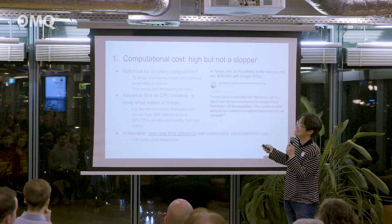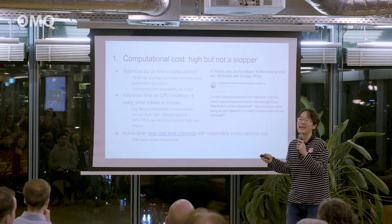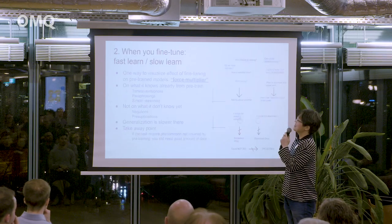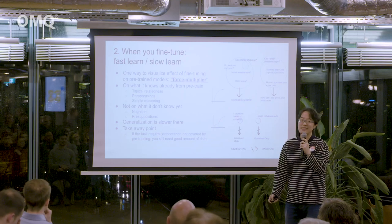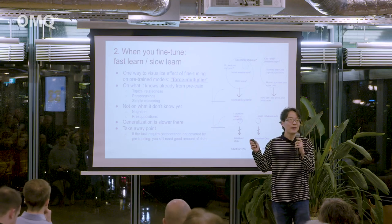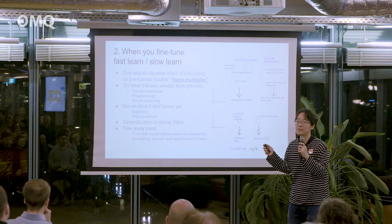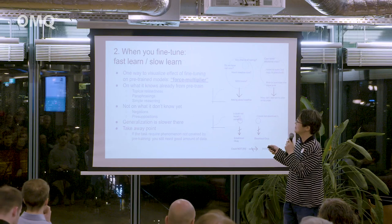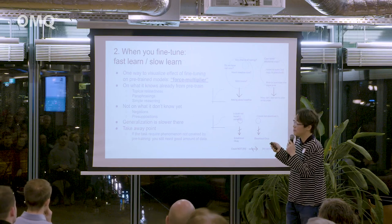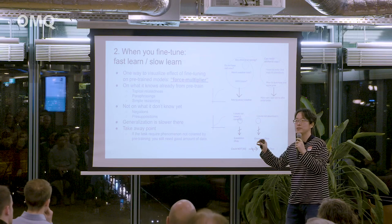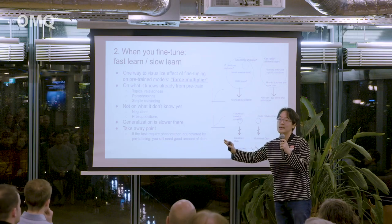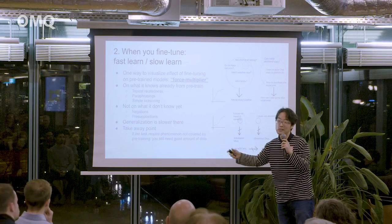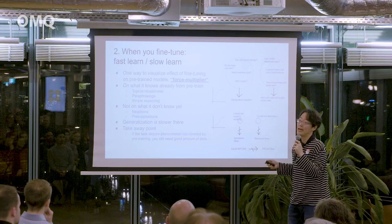That's the first lesson and why we are now slowly able to roll out the model. The second lesson is quite interesting. The term I use is 'force multiplier.' What I mean is: when you push something with a power of one but something is helping you, it works as if you are pushing with a power of ten. The pre-trained model — like BERT — already knows topical relationships, paraphrasing, and even simple reasoning pretty well.